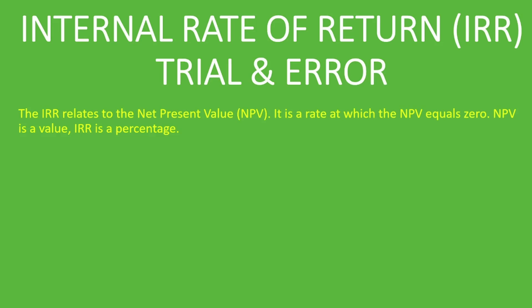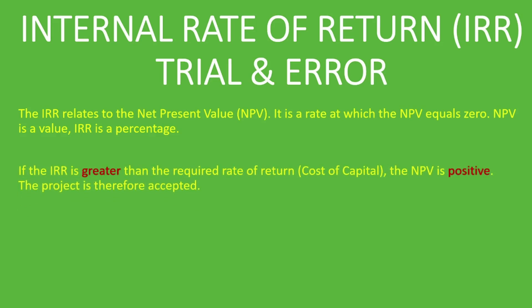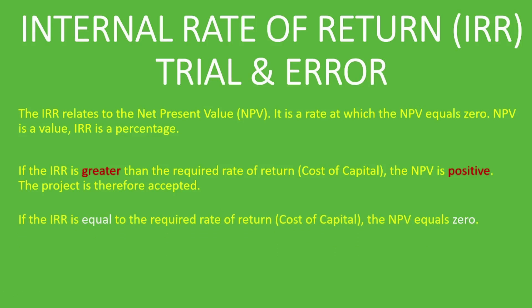If the IRR is greater than the required rate of return or cost of capital, the NPV is positive, which means the project is accepted. If the IRR equals the required rate of return or cost of capital, the NPV equals zero. It's important to understand these relationships because they apply when we use the trial and error method.